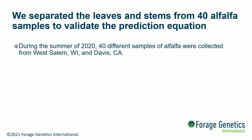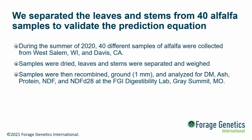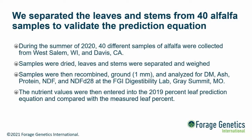In 2020, we selected 40 brand new samples from two of the research centers — West Salem, Wisconsin and Davis, California. We did the same process: dried them, stripped the leaves, weighed them, figured out the percentage, recombined them, ground them over a one-millimeter screen, and analyzed for all the nutrient profiles. This time we put them through the prediction equation developed in 2019 — a completely independent set of data — to see how well it actually predicted leaf content.